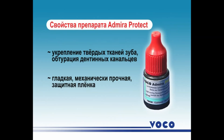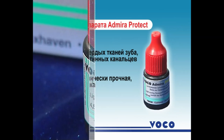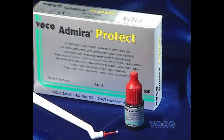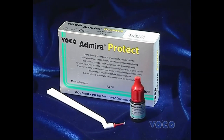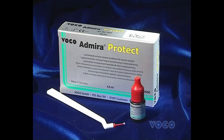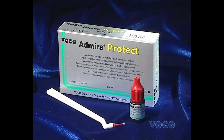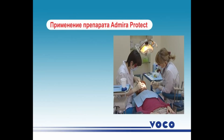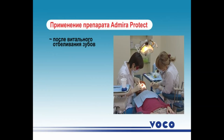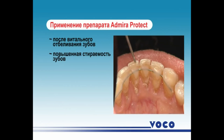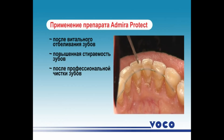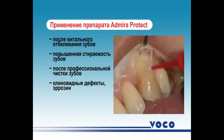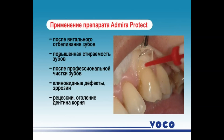AdmiroProtect is economical and easy to use. It is one of the fastest and most reliable ways to eliminate tooth hypersensitivity. Indications for use: condition after vital teeth whitening, increased tooth wear, after professional hygiene, wedge-shaped defects and erosion of tooth tissues, recession and exposure of root dentine after vital tooth preparation.